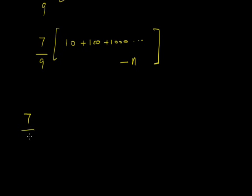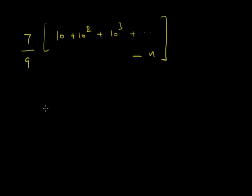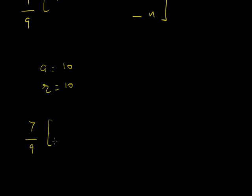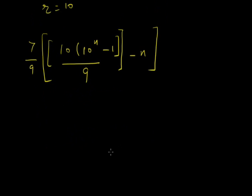So we have 7/9 times the sum of (10 + 10² + 10³ + ... up to N terms) minus N. Applying the GP sum formula with first term 10 and common ratio 10, it becomes 7/9 times [10(10^N − 1)/9 − N].